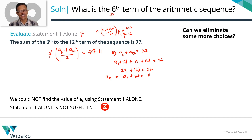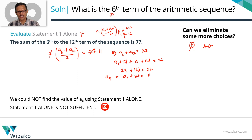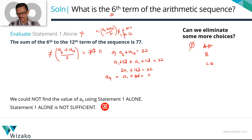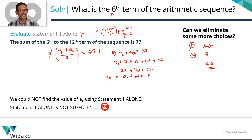Statement 1 alone is not sufficient, so we eliminate answer choices A and D. Choice A says statement 1 alone is sufficient; choice D says each statement is independently sufficient. If statement 1 is not sufficient, both these choices are removed. We are left with B, C, or E. If statement 2 alone is sufficient, we go with B. If not, we combine and check — if combined information is sufficient, we go with C; otherwise, E.